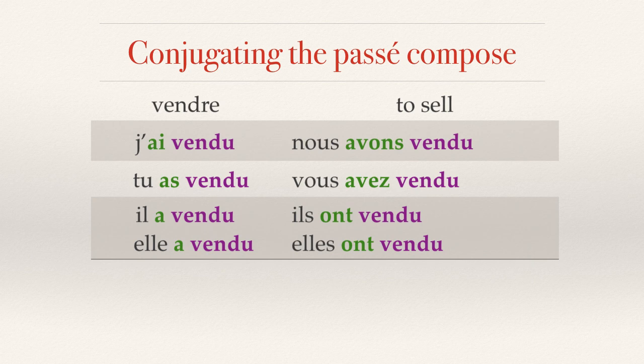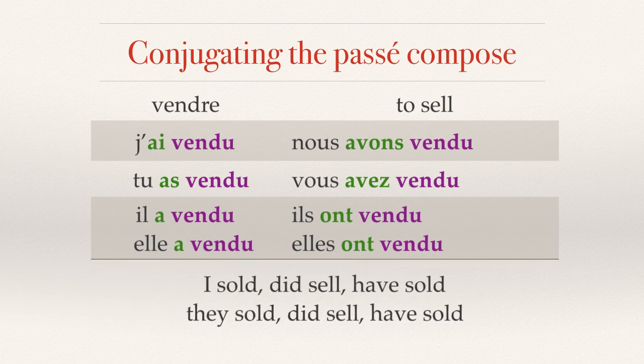Notice that when we say this, we do say the S like a Z because it's before a vowel. And of course, this is translated three different ways: j'ai vendu is I sold, I did sell, I have sold. Ils ont or elles ont vendu is they sold, they did sell, they have sold.